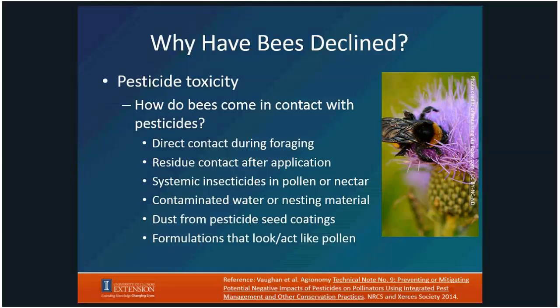Bees also need water and nesting materials, and those things can become contaminated if environmental pesticides have persisted. There is a lot of discussion right now about seed coatings — most people who've seen a bag of corn or soybean seed ripped open notice the funny pink or green color. Those are fungicidal and pesticidal seed coatings, and a lot of them are neonicotinoids. Dusts and small granular formulations can actually stick to the leg hairs or go into the pollen pouches of the bee and be returned back to the colony.